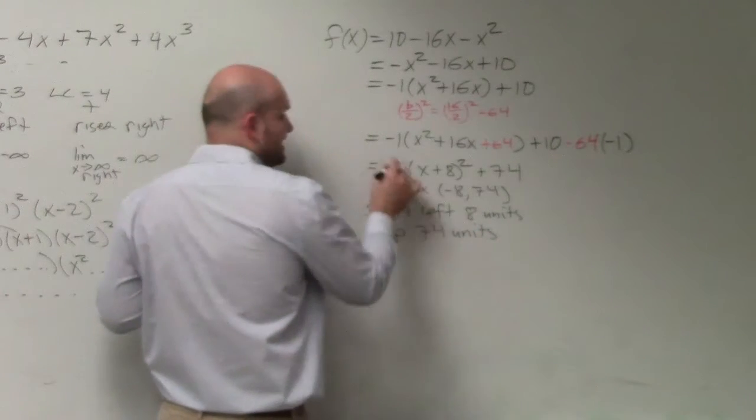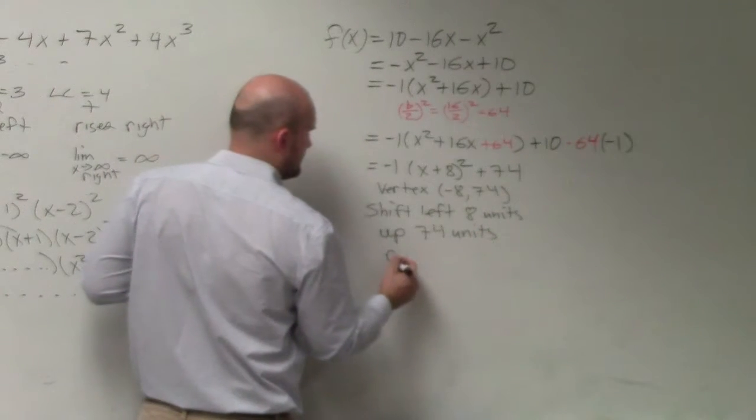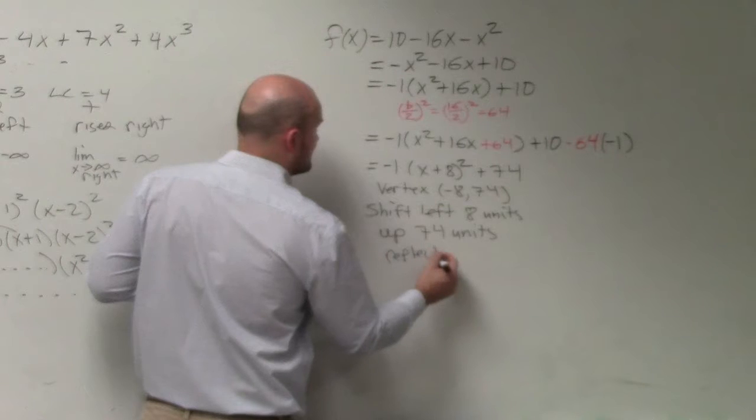And so you could say it's shift left 8 units up 74 units. And it says, and the negative on the outside tells us to reflect the x-axis.